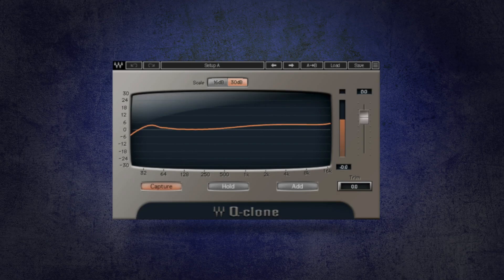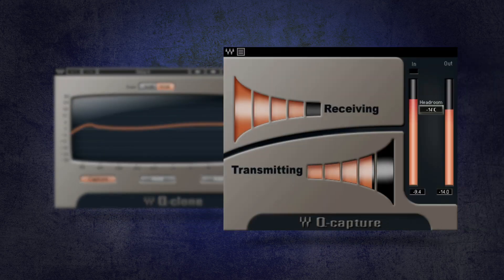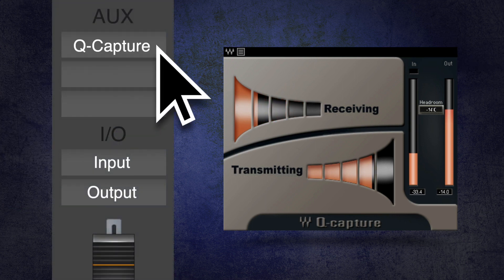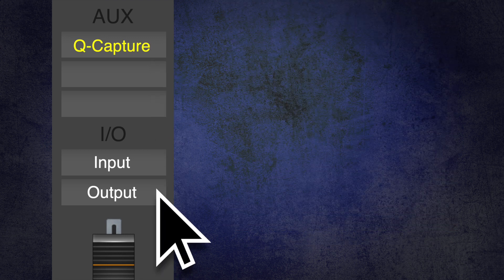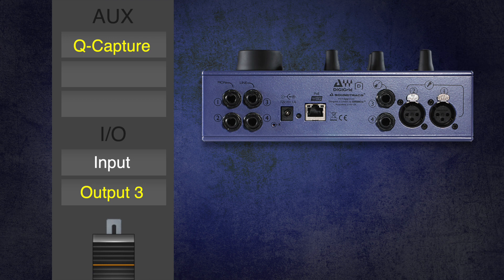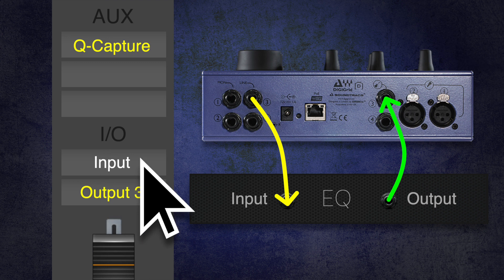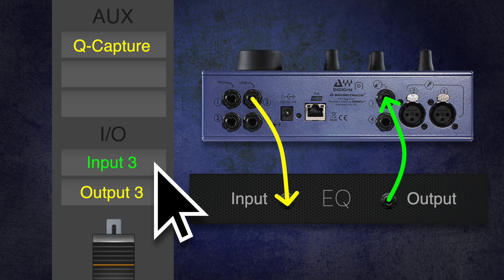With Q-Clone, you get a companion plug-in called Q-Capture, which communicates with your hardware EQ with constant sweep waves. For the most basic of setups, first insert Q-Capture on a blank auxiliary track in your session. Set the output of this aux to an available physical output on your audio interface, then physically patch that output to the input of your EQ. Finally, physically patch the output of that EQ to an available input on your audio interface and set the input on the Q-Capture aux to that same input.